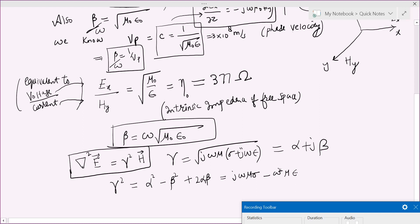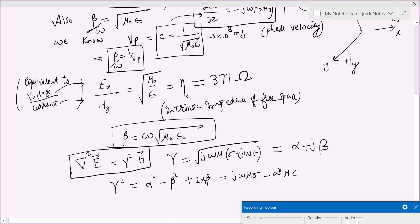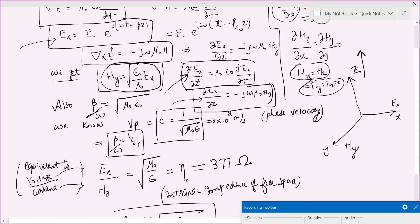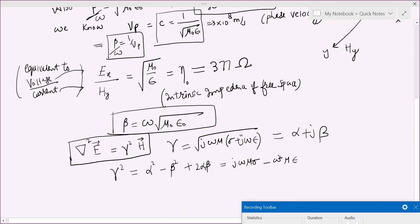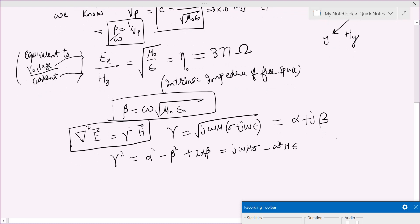And that will be equal to j omega mu sigma minus omega squared mu epsilon. If you see our previous wave equation which we solved, if you look at these wave equations, the solution therein also, there is no complex term, there is no imaginary term here. The second derivative of E_x. So this alpha is zero actually.